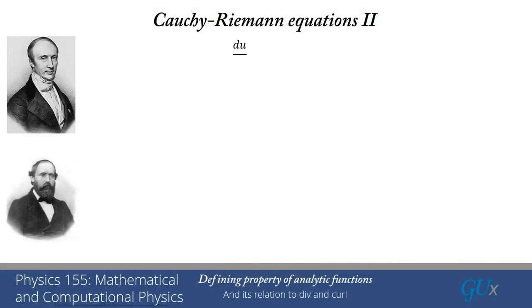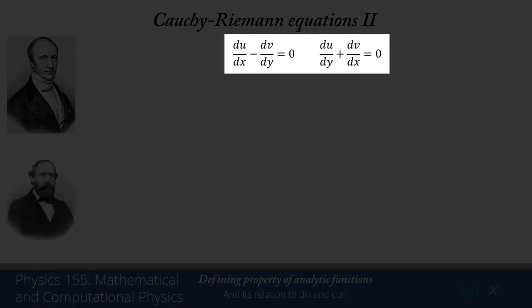We're going to rewrite them and express them as equations as something equals 0. And I get du by dx minus dv by dy is equal to 0. And I get du by dy plus dv by dx is equal to 0. Now if I think of u as the x component of a vector field, and I think of v as the y component of a vector field, you can see this looks like a divergence on the left-hand side, the equation on the left, except it's got a minus sign instead of a plus sign. And the divergence would have been dfx by dx plus dfy by dy. But here we have dfx by dx minus dfy by dy.